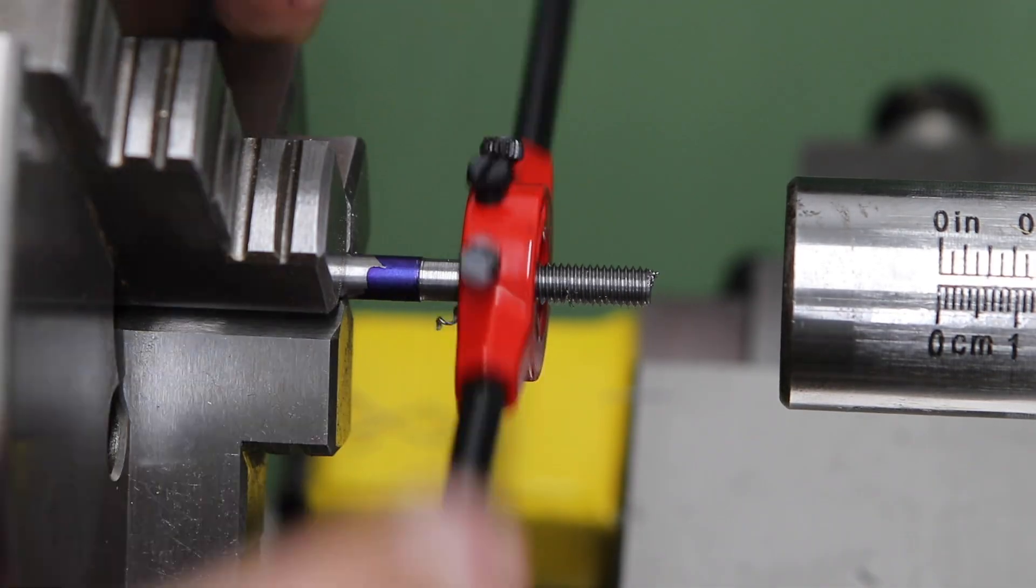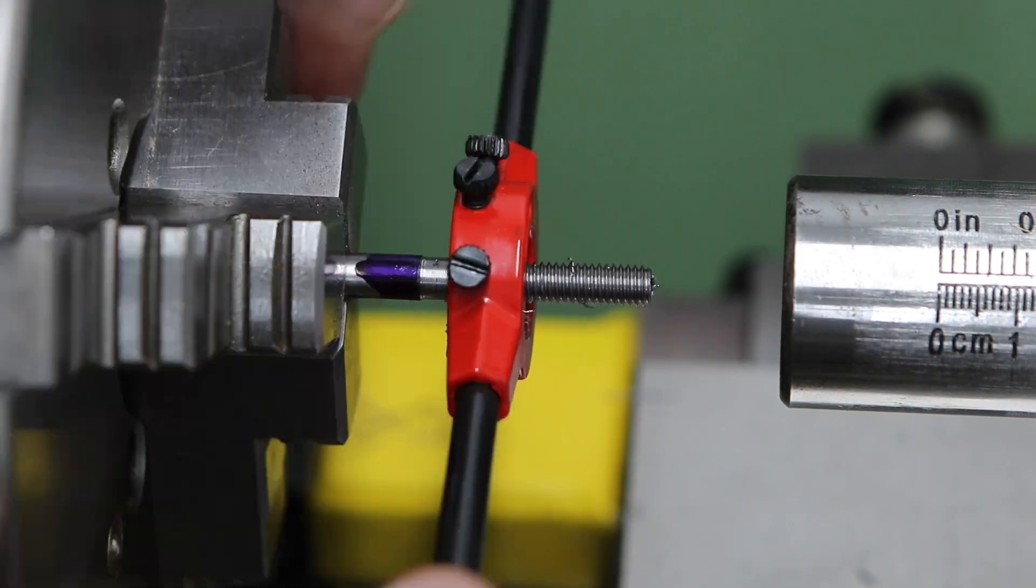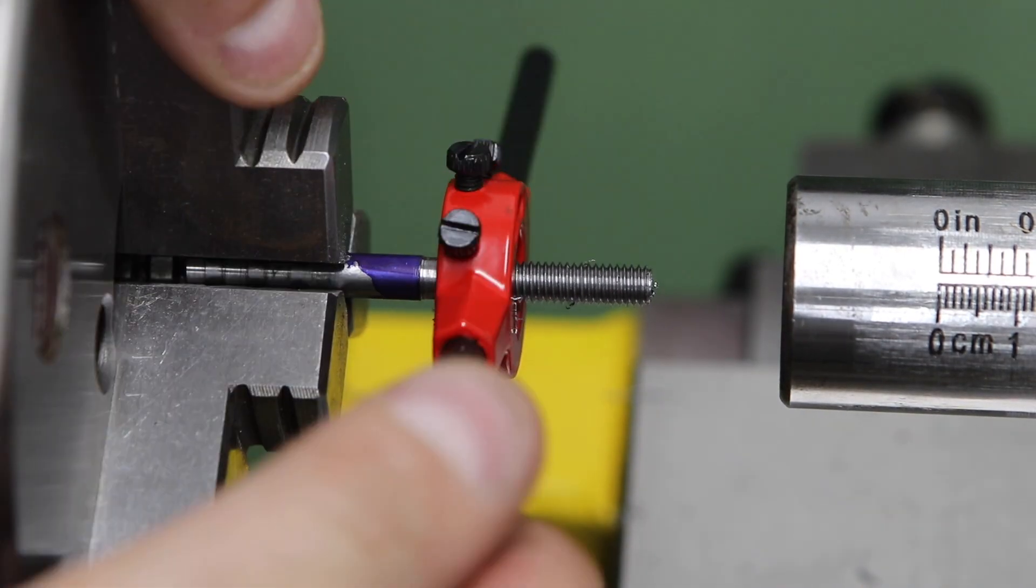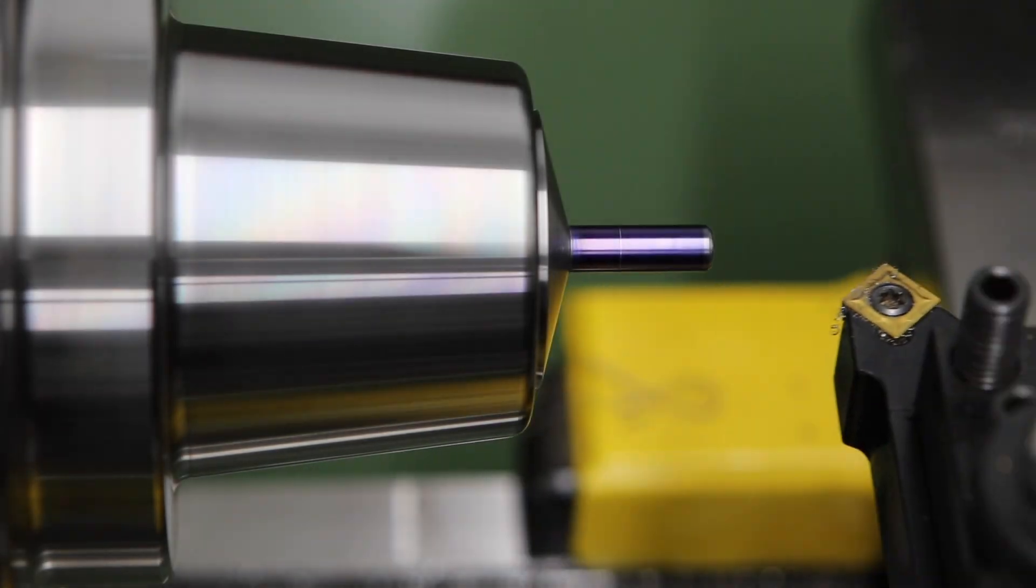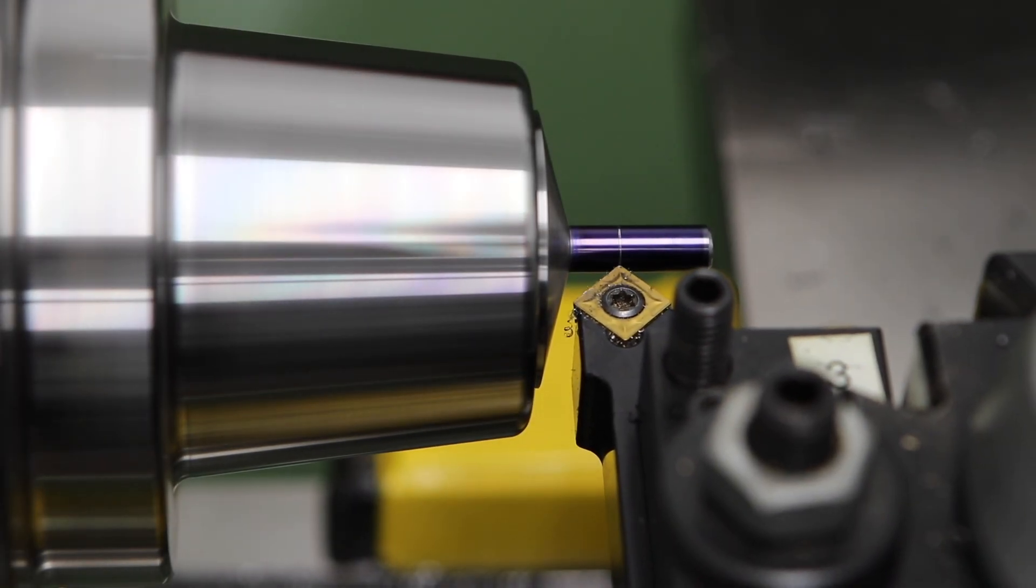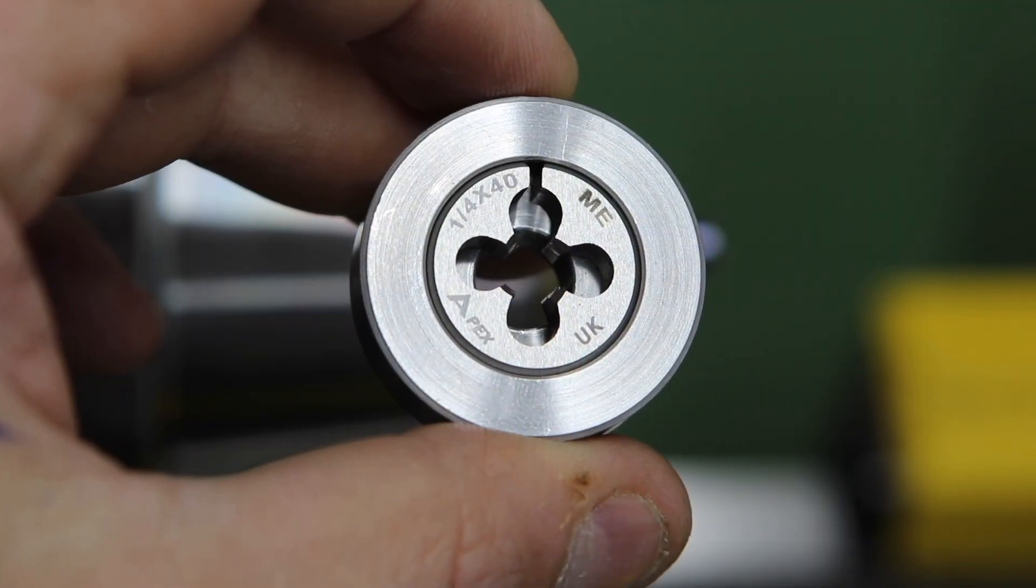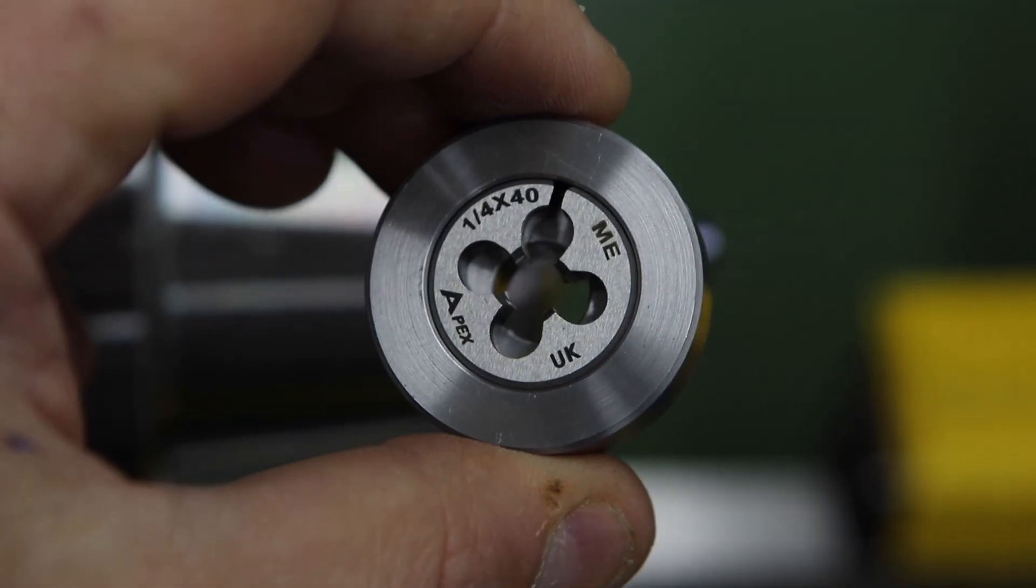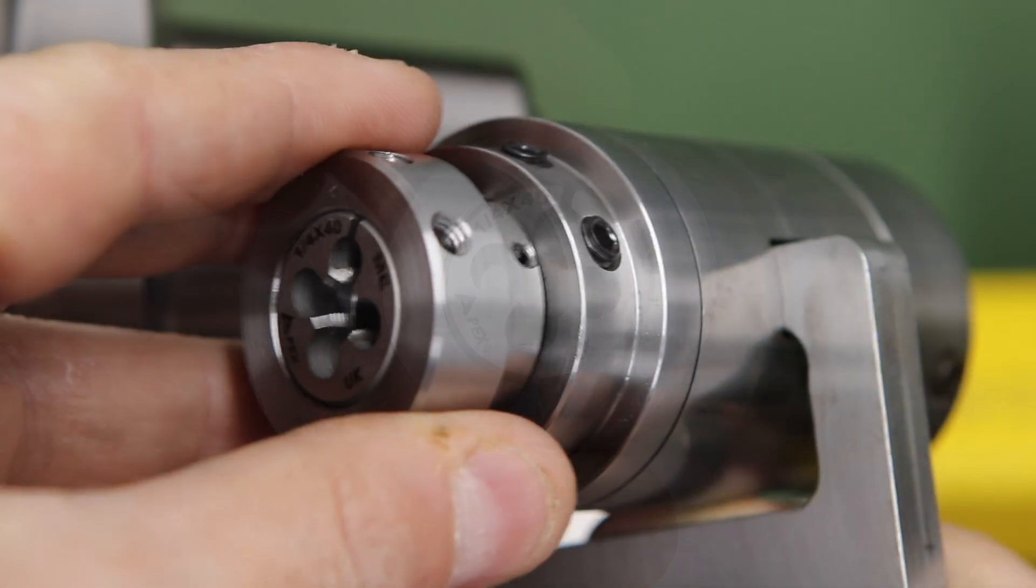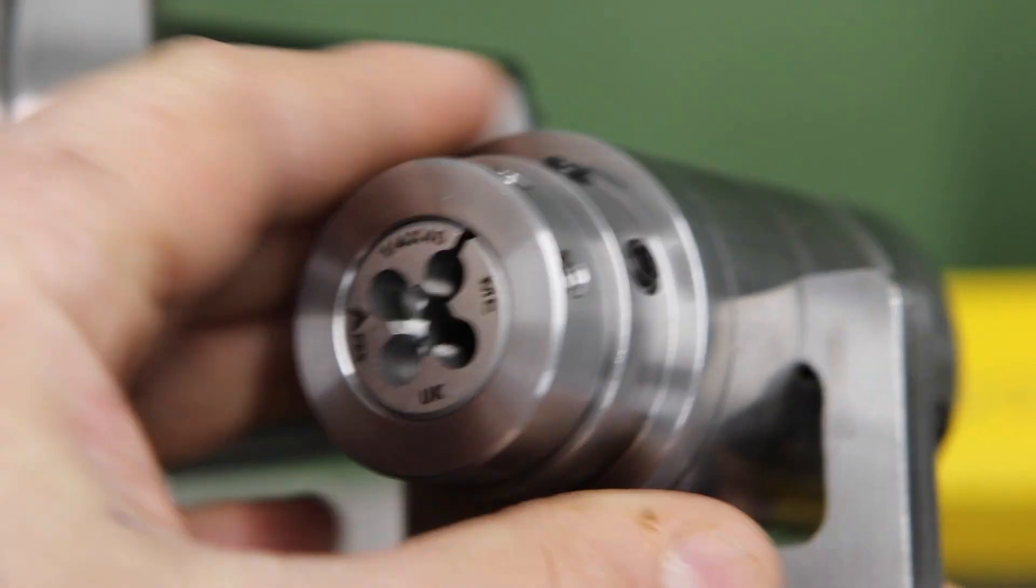Over to the lathe now to make the central post which holds the whole assembly together. This end on the main body of the post is tapped M6 to accept a knurled nut which clamps the assembly together and the other end is turned quarter inch to accept a quarter 40 die which is the same thread as the hole in the base.